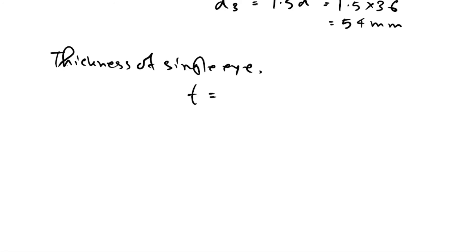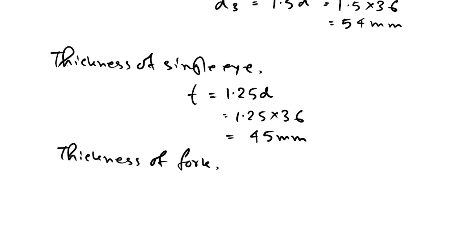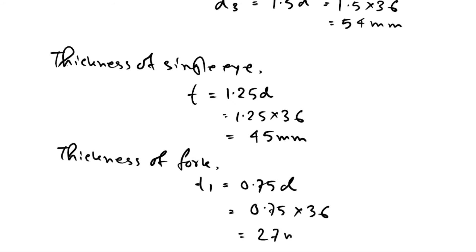Further dimensions: another dimension = 1.25 × D = 1.25 × 36 = 45 mm. Another dimension = 0.75 × D = 0.75 × 36 = 27 mm. D3 = 76 mm, Dy = 33 mm.